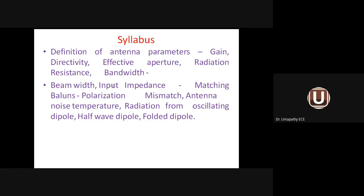Bandwidth means the range of frequency meant for a particular application. Mathematically, bandwidth = f2 − f1 (higher frequency minus lower frequency). The antenna has an input impedance with both resistance and reactance components. The resistance part is divided into radiation resistance and loss resistance.